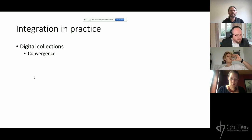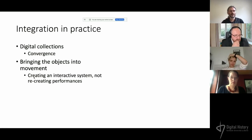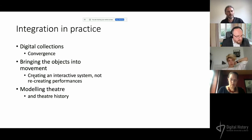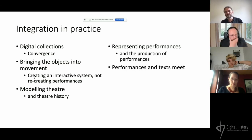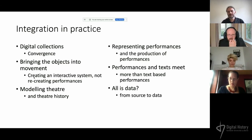In digital collections in a theatre collection setting, there is the convergence you see in all other settings. There is also the digital potential of bringing objects into movement, as we saw with the mask example, which means we are modeling theatre. On the other hand, we have network structures needed to model theatre history — modeling performance and modeling theatre history are connected but different things. We are representing performances and need different tools and methodologies for that. In both settings, performance and text meet, but this is not to say performance is always text-based — they are very often connected. And of course, it remains a question of data and source.